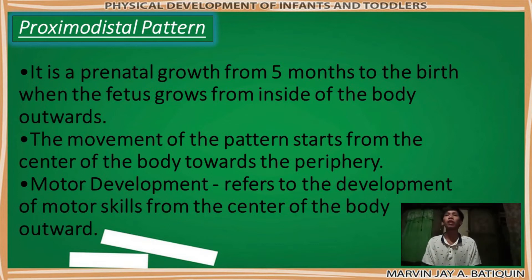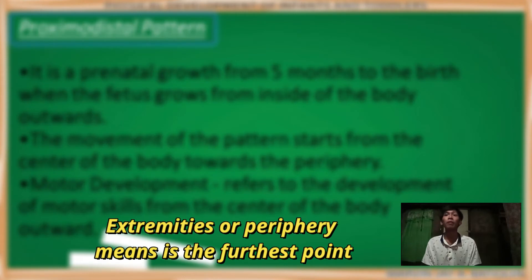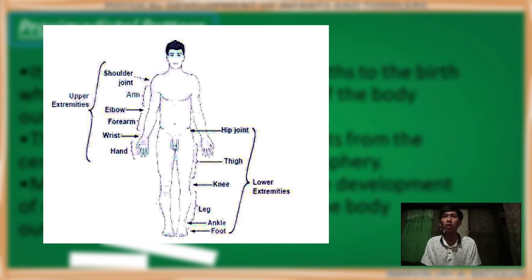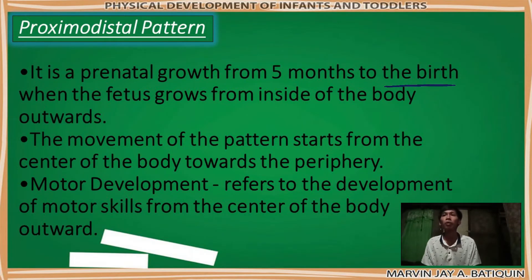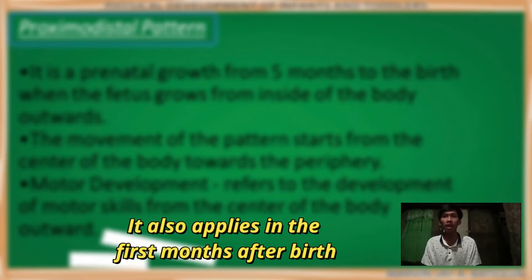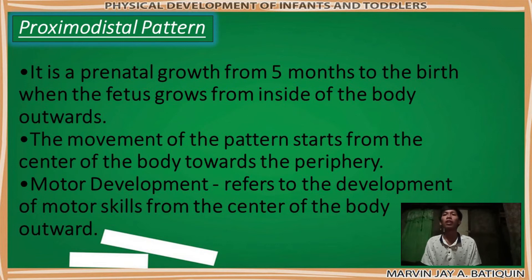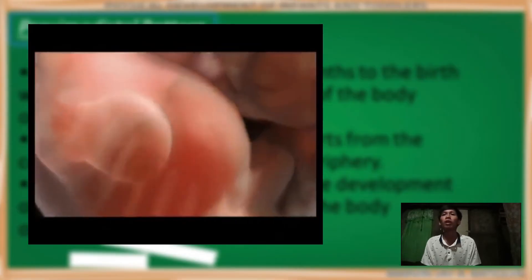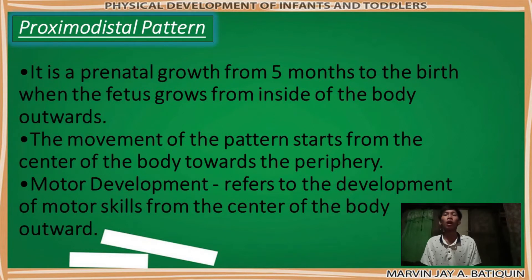The movement of the proximodistal pattern starts from the center of the body towards the periphery — meaning starting from the middle of the body, it develops and proceeds toward the extremities. Extremities or periphery means the farthest points, which are the arms and the legs. The growth of the proximodistal trend ends after birth, but there is an extension: it also applies in the first months after birth, in the maturation of muscular control of the trunk and the arms, followed by the hands and fingers. For example, the hands and feet develop before the fingers and toes.